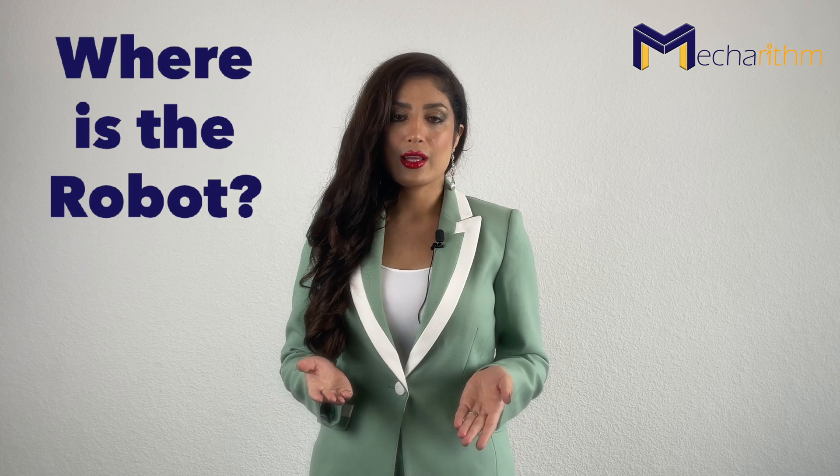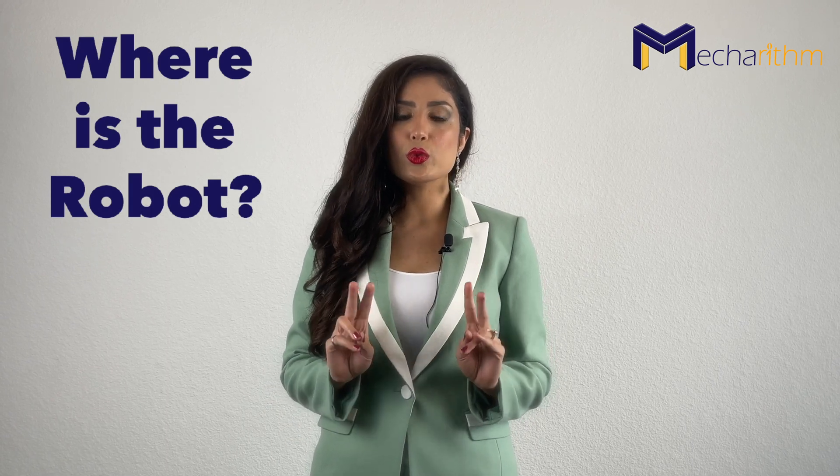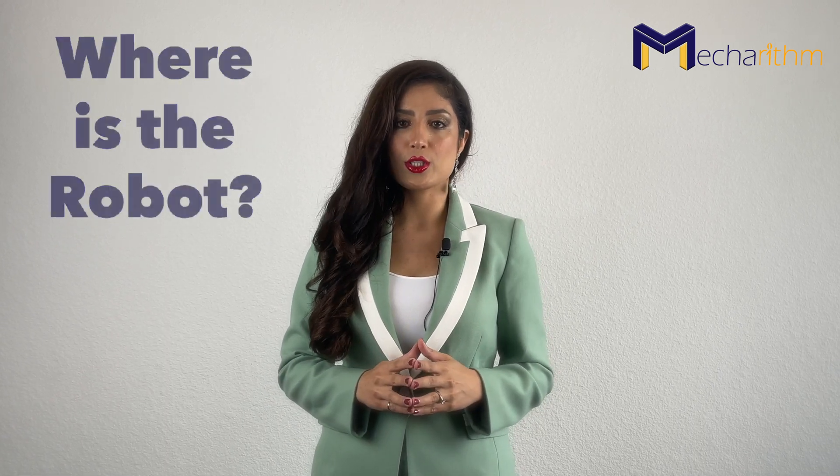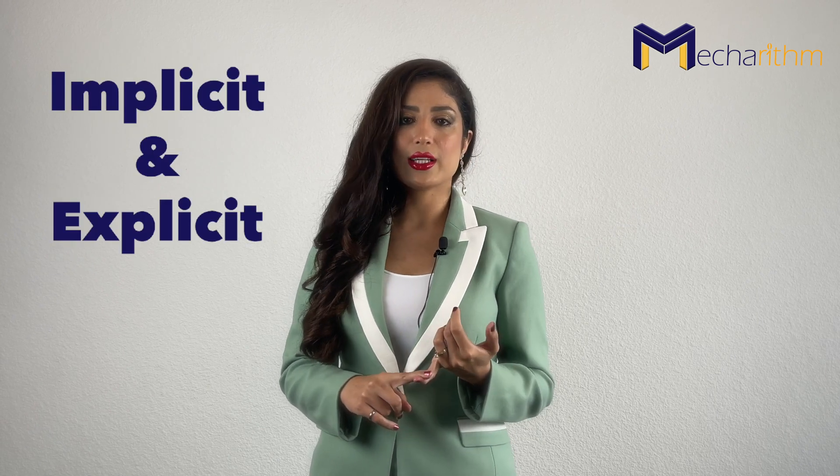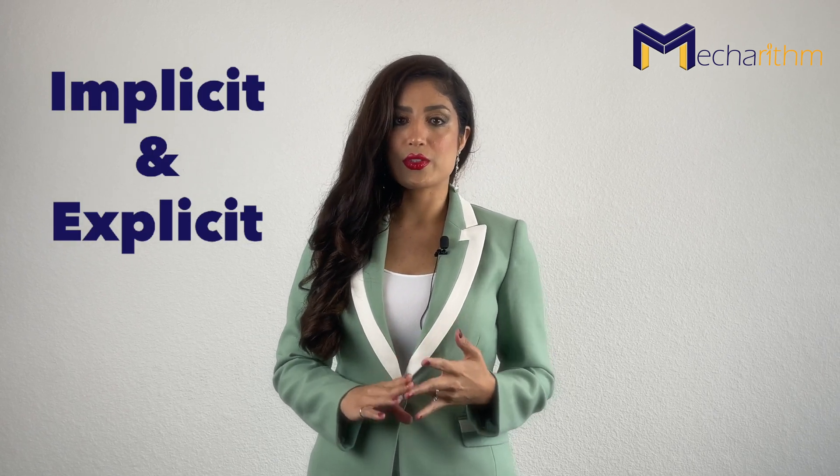In previous lesson, we saw that the robot's configuration answers the question where the robot is. And we saw that we have two ways to represent the configuration: implicit representation and explicit representation.